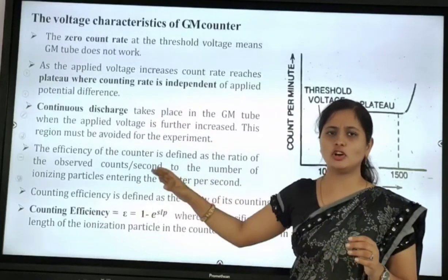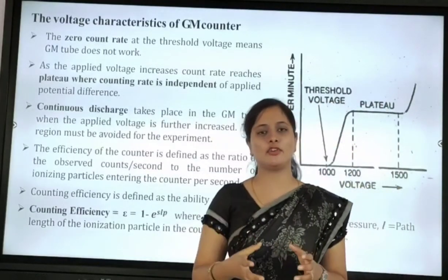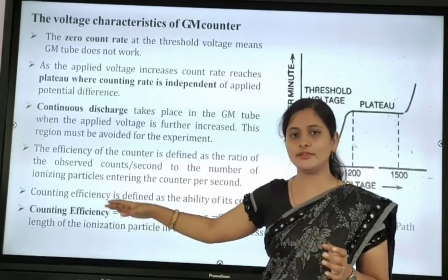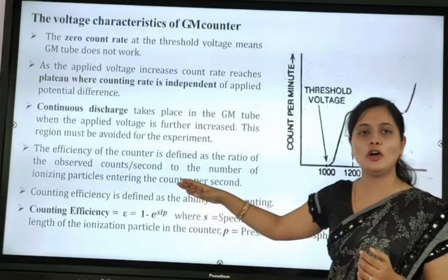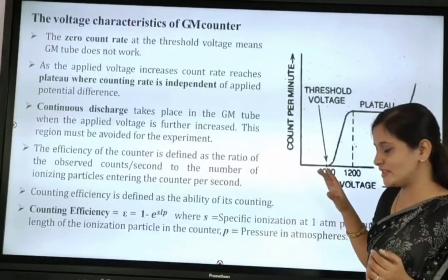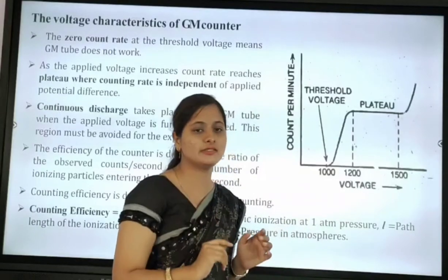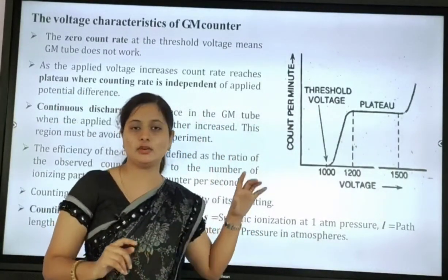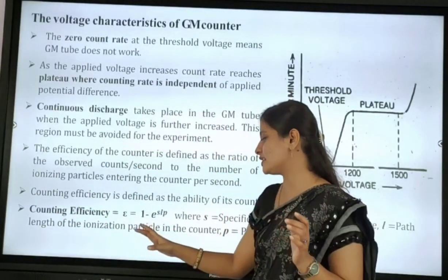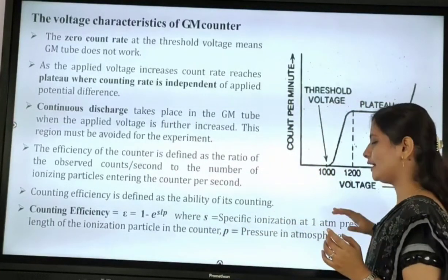The counting efficiency is given by the formula: counting efficiency = 1 − e^(SLP), where S is the specific ionization at one atmospheric pressure, L is the path length of the ionizing particle in the counter, and P is the pressure in atmospheres.